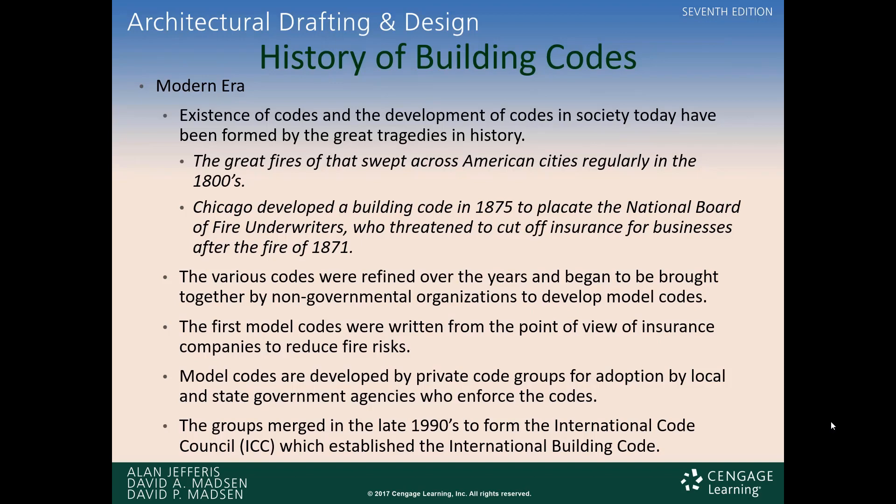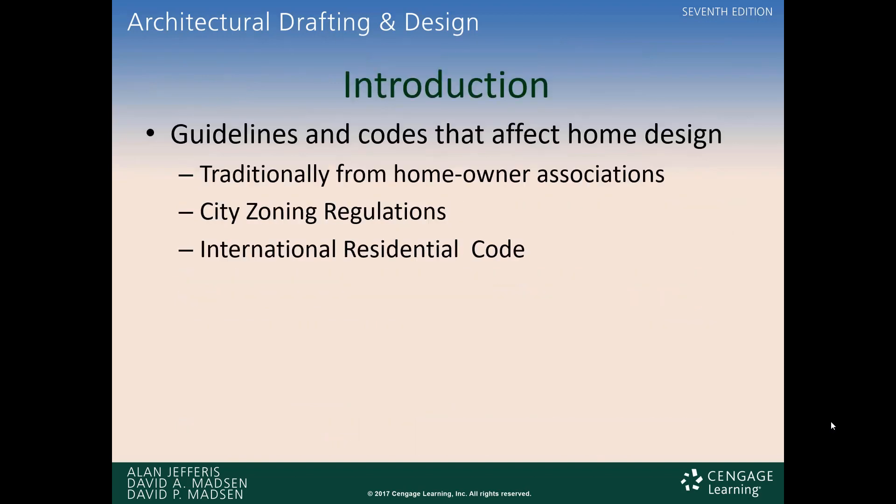The codes have been refined over the years. The first model codes were developed from the point of the insurance company to reduce fire risk. They're developed by private code groups for adoption by local and state government agencies. When I first started working, we had multiple codes around the United States — the Southern Building Code, the International Building Code, the UBC code — so depending on where you were working, you used a different code. In the 1990s, they formed the International Code Council, which now has all of the international building codes adopted into it, and that is what is used throughout the United States and internationally.